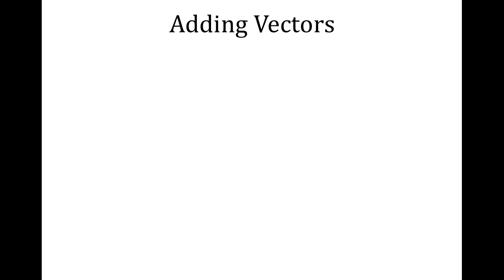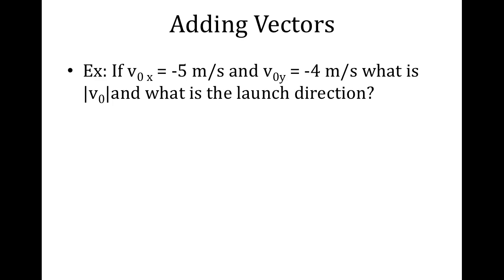What if we want to add vectors together? If you're given the initial or final velocity components in x and y and want to find the overall velocity, you need to go backwards. Given the components, here's how you do it.